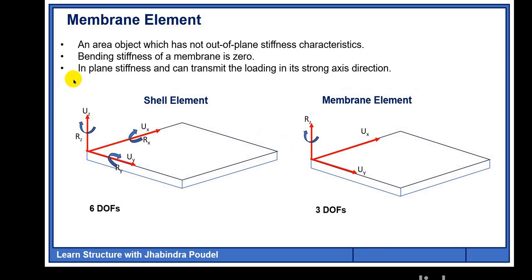Membrane element is an area object which has no out-of-plane stiffness characteristics, so the bending stiffness of a membrane is zero. All the force applied to the membrane wall or slab — 100% of the applied force — is transferred to the adjacent beams through the membrane. The in-plane stiffness can transmit the loading in the strong axis direction.